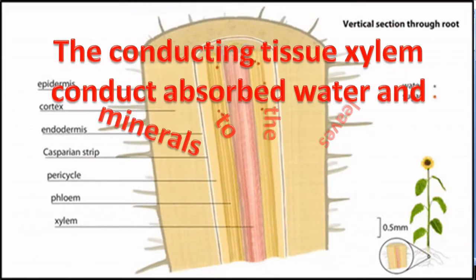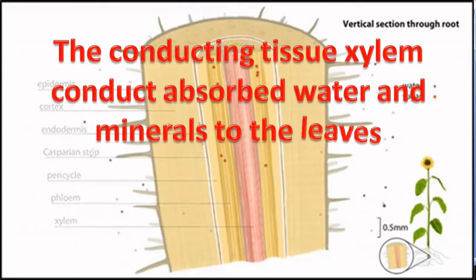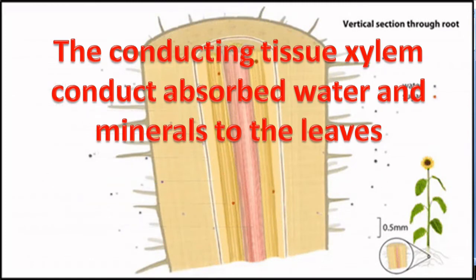The conducting tissue xylem conducts absorbed water and minerals to the leaves.